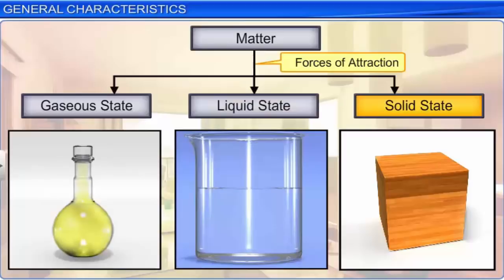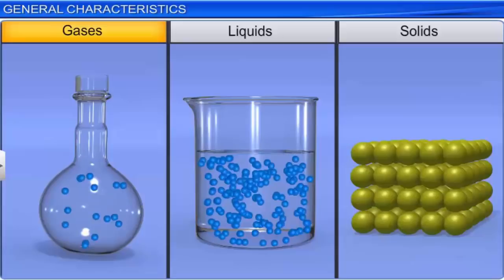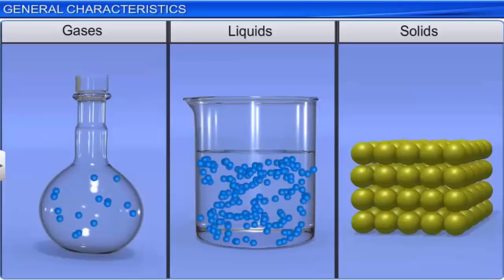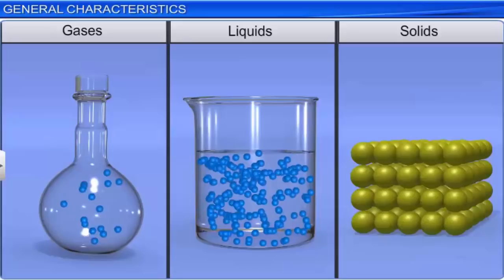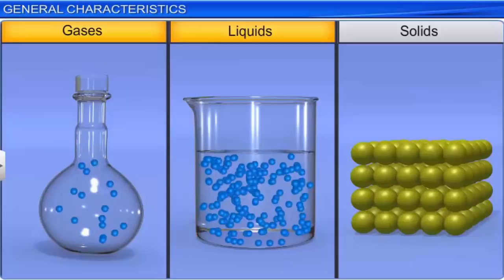The constituent particles in gases and liquids are held together by relatively weak forces of attraction as compared to those in solids. As a consequence, they can translate randomly, rotate, and vibrate. Gases and liquids thus have the ability to flow and take the shape of their container.